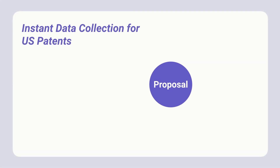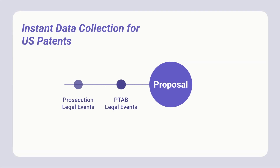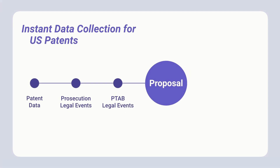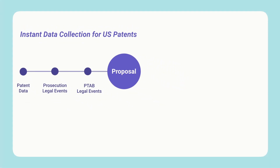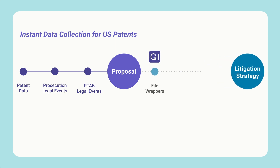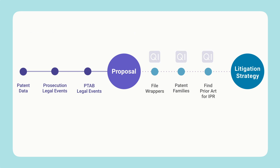QI helps you to collect well-organized patent data and legal events from prosecution and PTAB, which are essential when successfully pitching to new clients. To form the best litigation strategy, organized file wrappers, patent family info, and uncovered prior art references are provided.